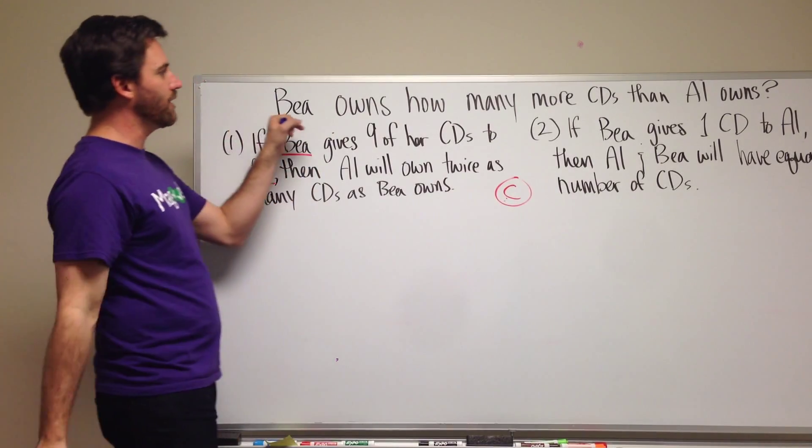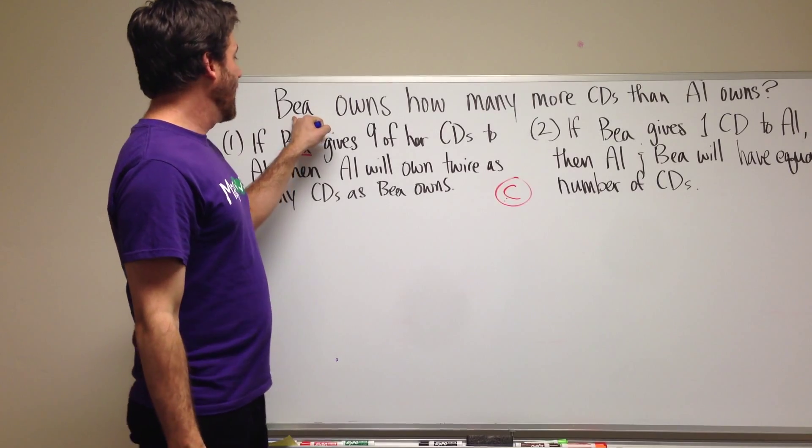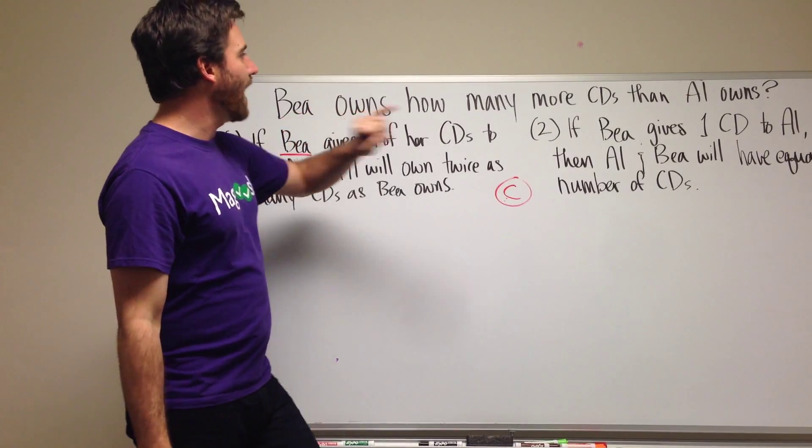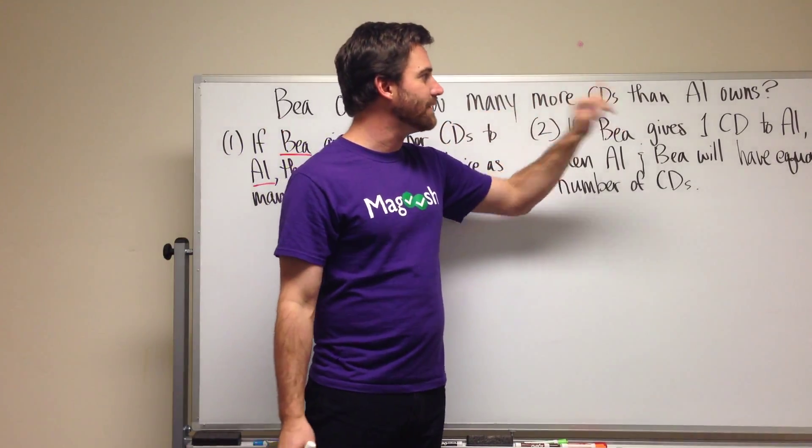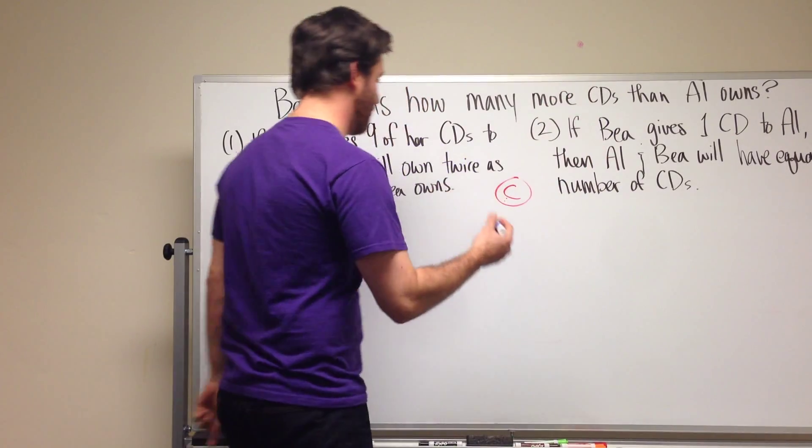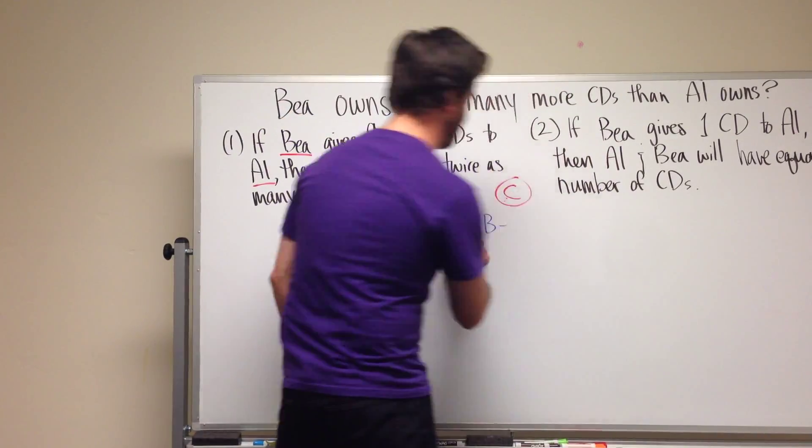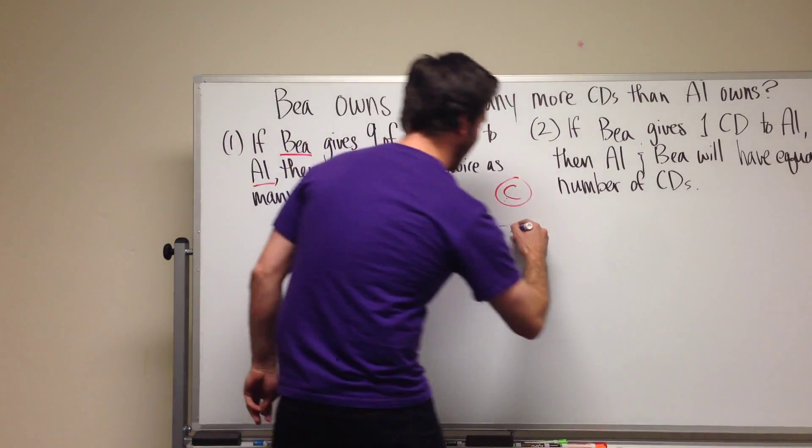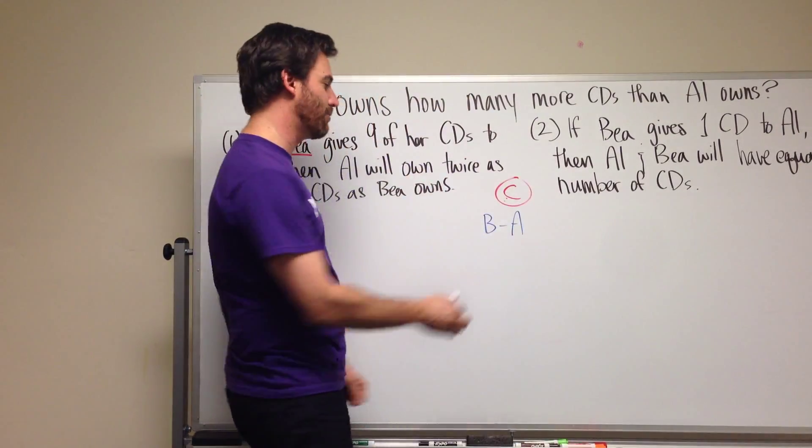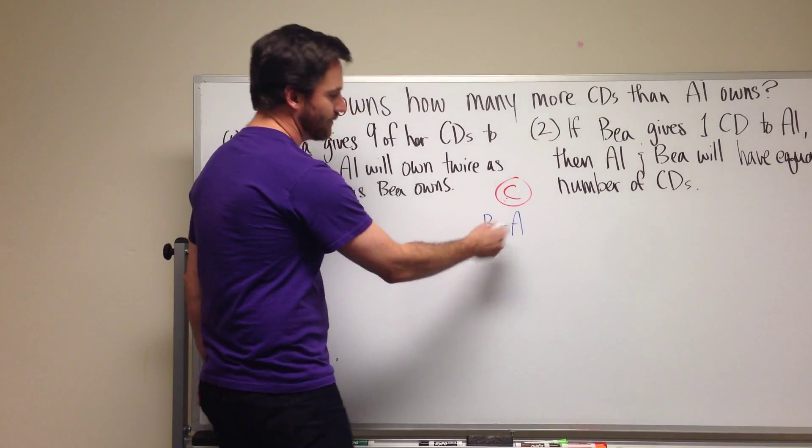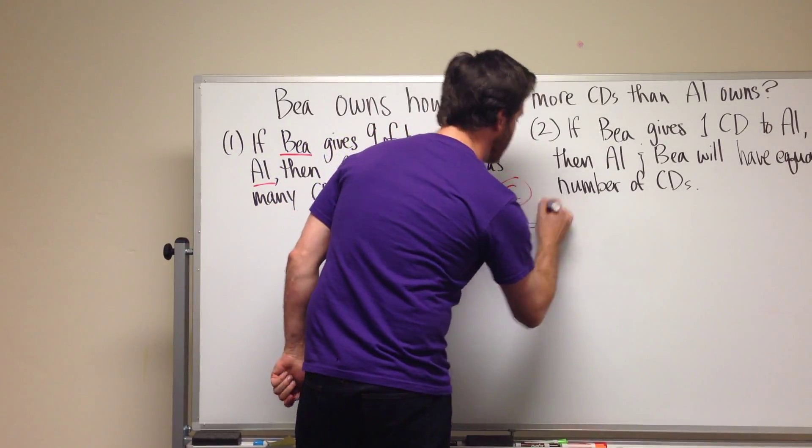The first thing we can do is look at the question again. We want to know B owns how many more CDs than Al owns. So we can actually make a formula of that. So we're trying to figure out B minus A. We're going to subtract Al CDs from B CDs and see what's left.